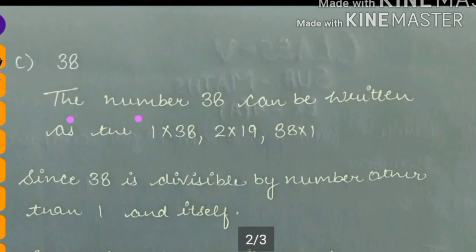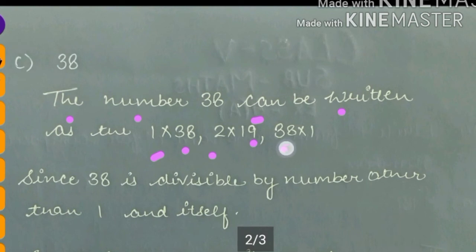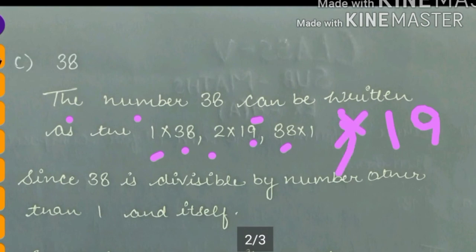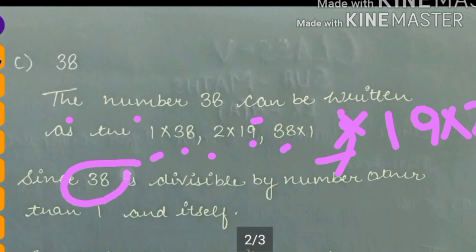Next part: the number 38 can be written as 1 into 38 and 2 into 19. You also write like that: 38 into 1 and 19 into 2. Is that clear?